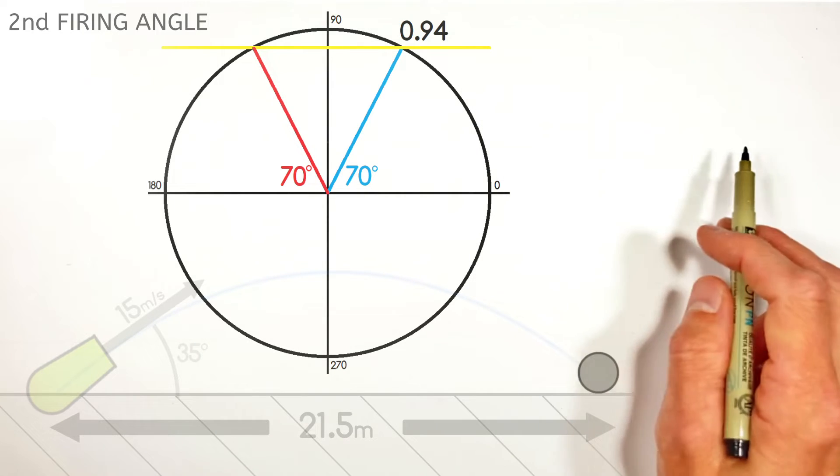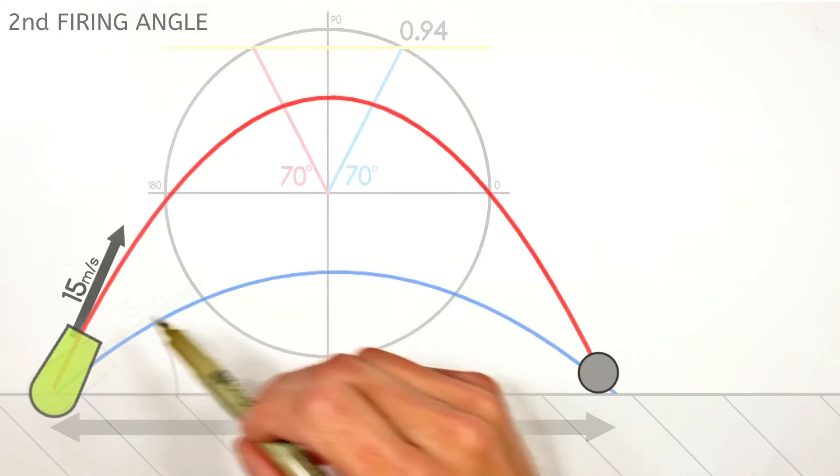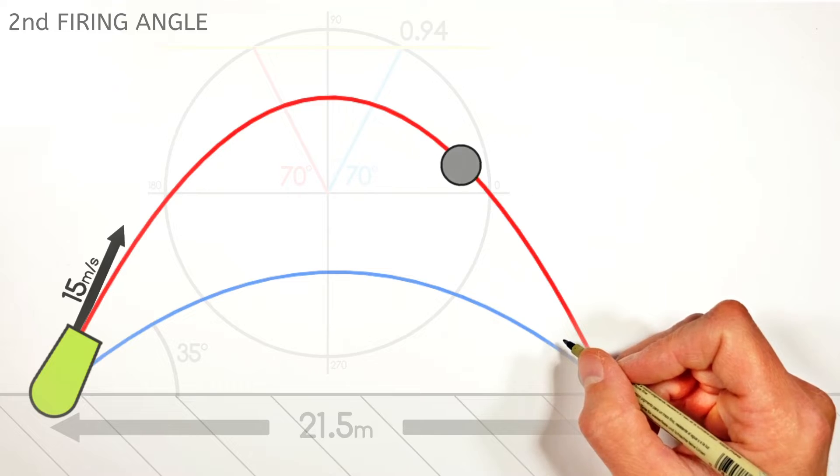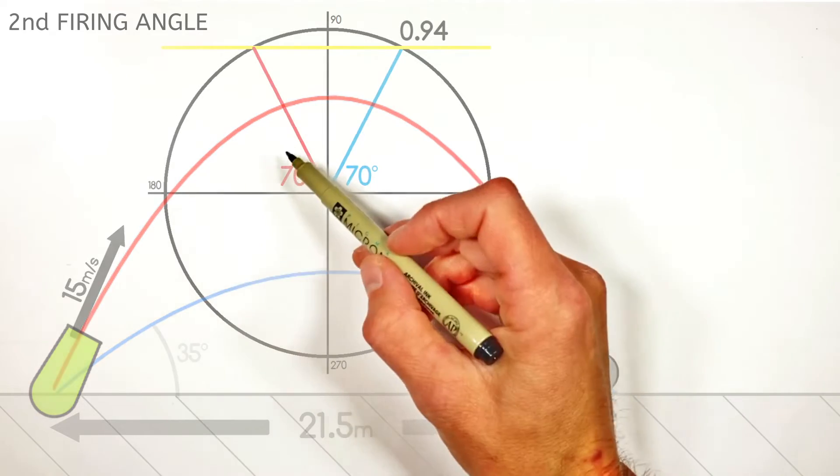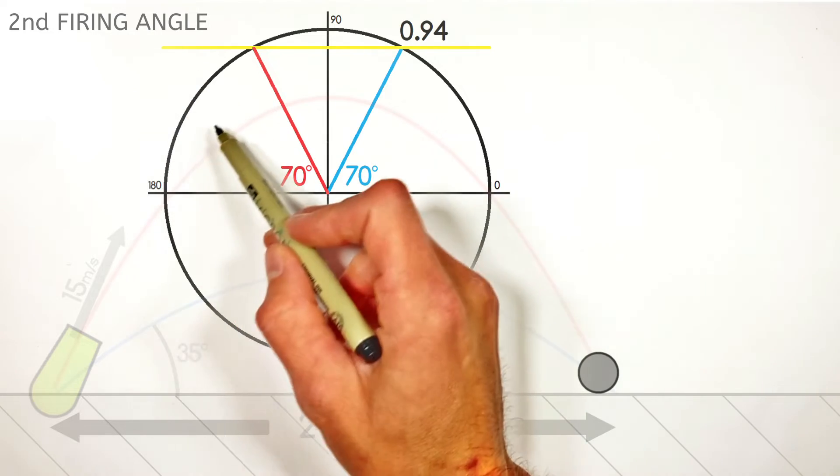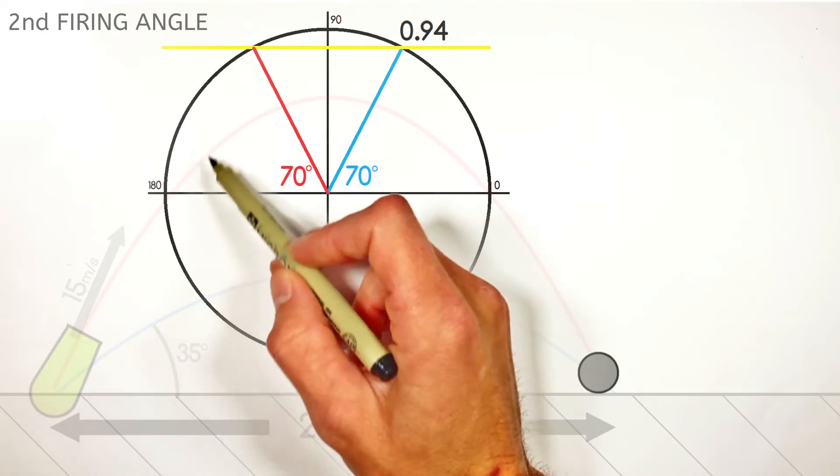And mathematically, what that means in the range equation is there's a second angle at which we can fire our cannon to produce the same range. Going back to the unit circle, the angle between this vector and the horizontal axis, really the negative x-axis, is 70 degrees.